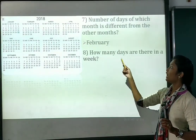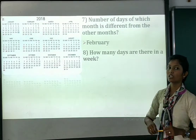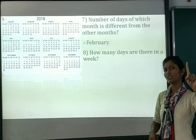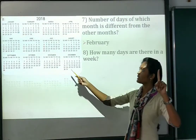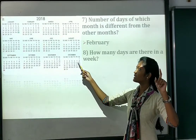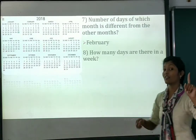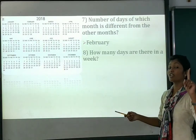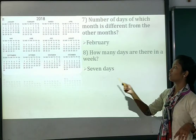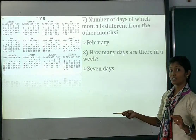Number 8: how many days are there in a week? Let's count: 1, 2, 3, 4, 5, 6 and 7 — 7 days. So we will write here 7 days.